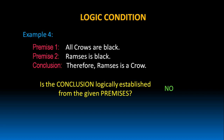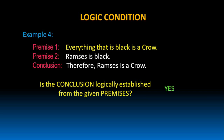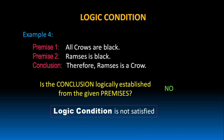Because premise 1 says all crows are black. It doesn't say everything that is black is a crow. If it said everything that is black is a crow, then we could conclude Ramses is a crow because he is black. But it doesn't say everything that is black is a crow — it says all crows are black. From that we cannot conclude Ramses is a crow just because he is black. That's why we can say logic condition in this argument is not satisfied.